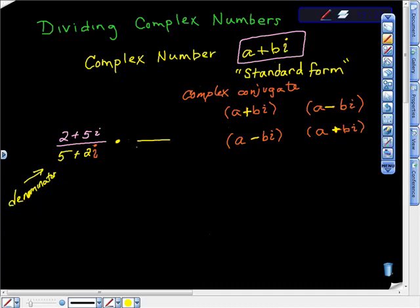So, I think we agree we have 5 plus 2i. This has a positive, so its complex conjugate is the negative, right? And we're going to put that over itself, 5 minus 2i. And if you're wondering why we would do that, the reason we're doing that is because all we're doing here is we're multiplying by one. What's the reason we're multiplying by one? It's because we're trying to get rid of this little orange i down here.